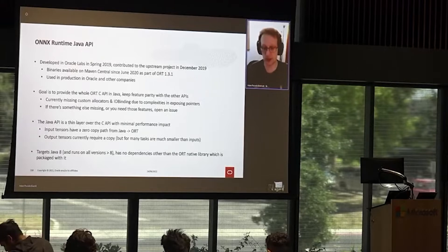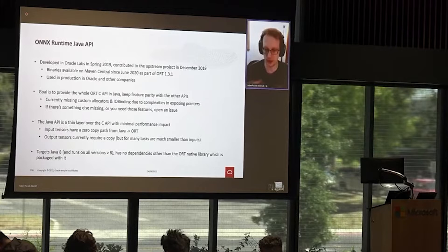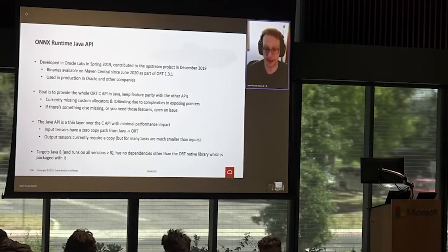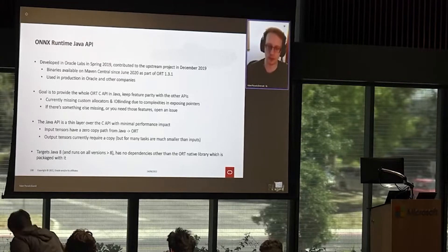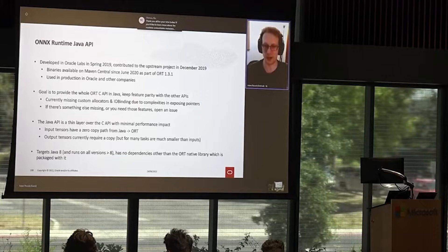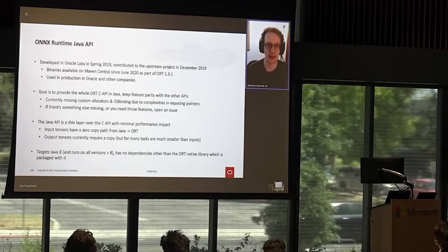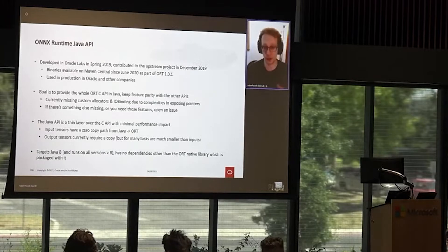Our goal is basically to provide the ONNX Runtime C API in Java in a way that's easy to use, idiomatic, and gives you all the functionality you'd expect. You can deploy all the models you need to. We want to try and keep feature parity with all the other APIs — there are a few things missing at the moment around custom memory allocation and IO binding, because it's difficult to express pointers and native memory operations in Java. But if there's something else missing or you need those features, please open an issue on GitHub and we can talk about it.